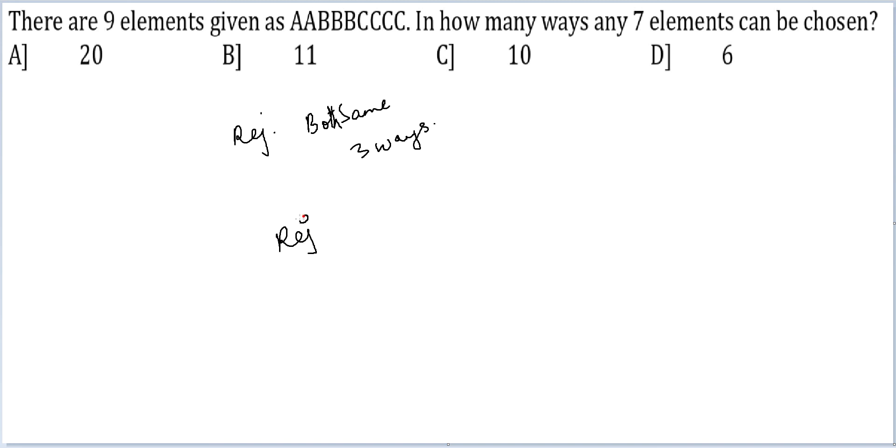And then rejecting both different. Out of these three, which two elements are to be rejected? You can select that in 3 choose 2 ways, so another three ways.